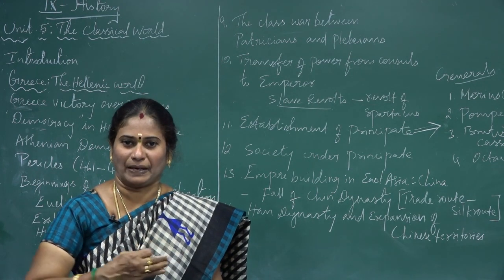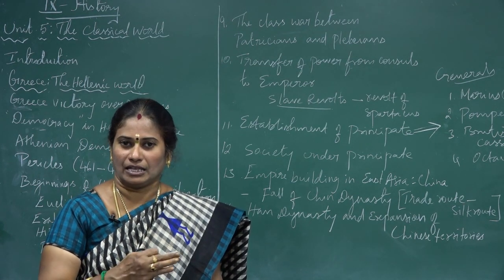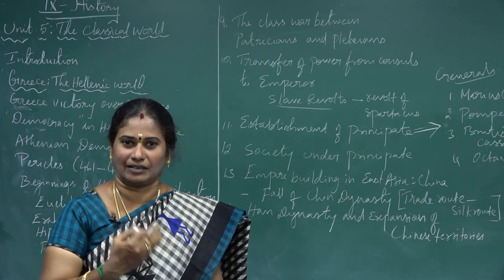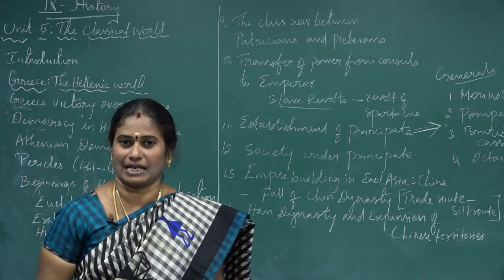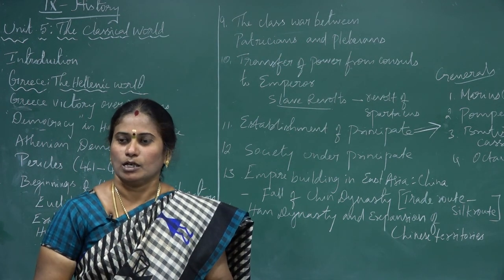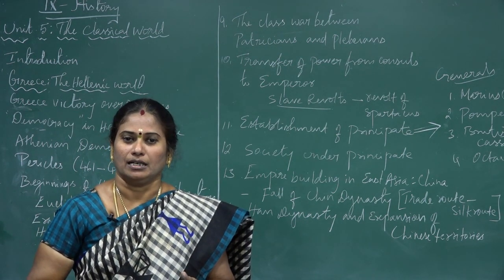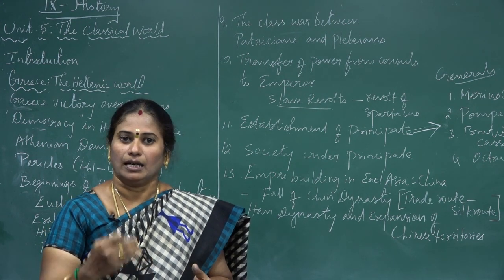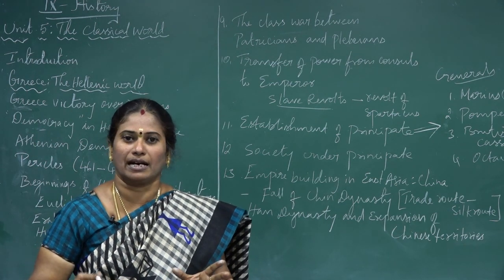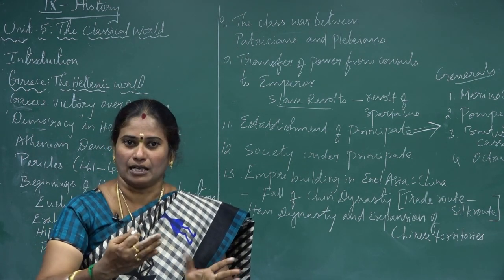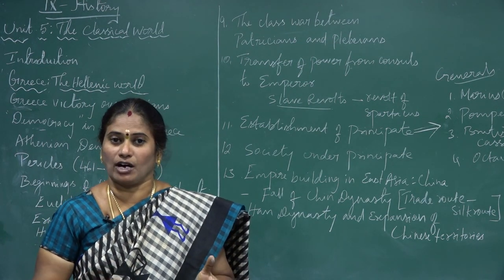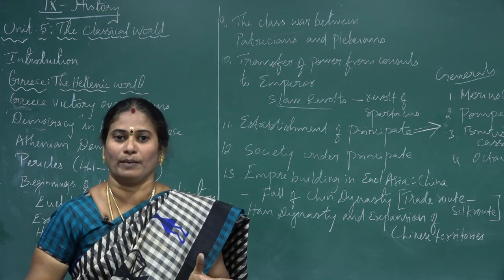The patricians and the plebeians both voiced in favor of the poor peasants. These poor peasants supported programs for development. But Senators looked at their development and murdered the Gracchi brothers. The martyrdom of these brothers transformed the Roman Republic into the Roman Empire.